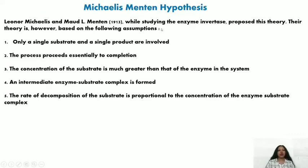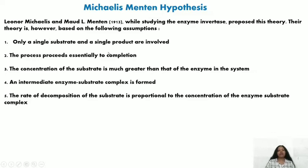They were studying the enzyme invertase and their theory was based on five assumptions. The first is that in their hypothesis only a single substrate and a single product are involved. We know that we have taken the equation E + S ⇌ ES → E + P — single enzyme, single substrate, single product.